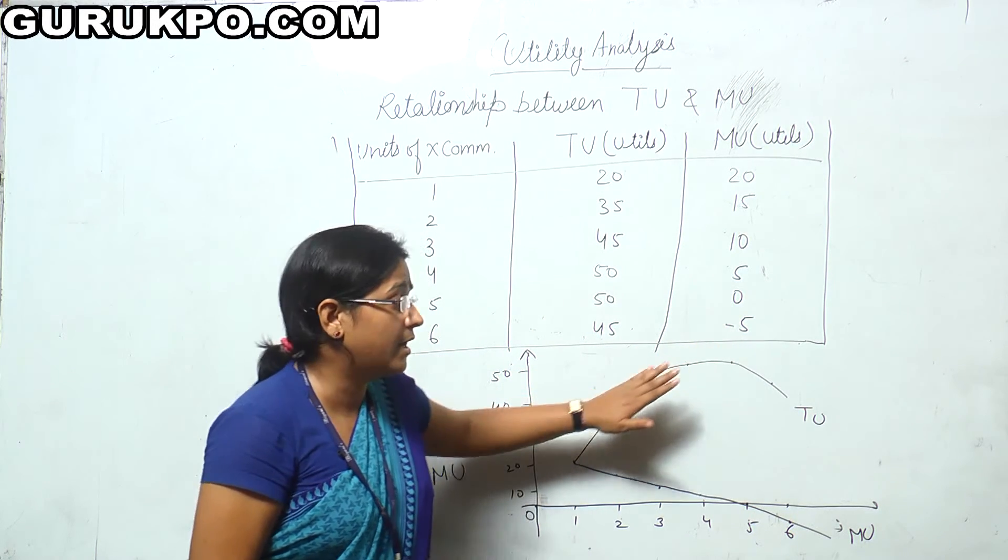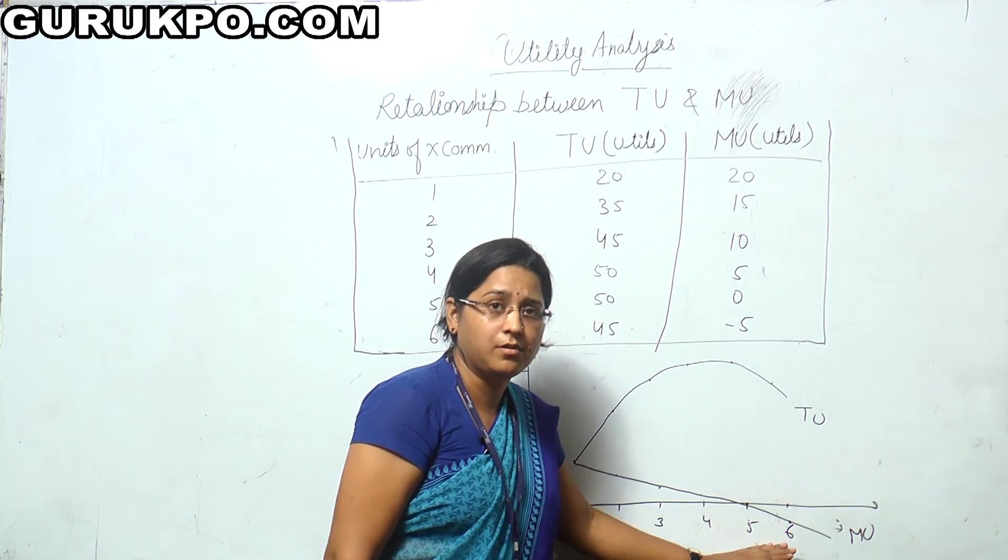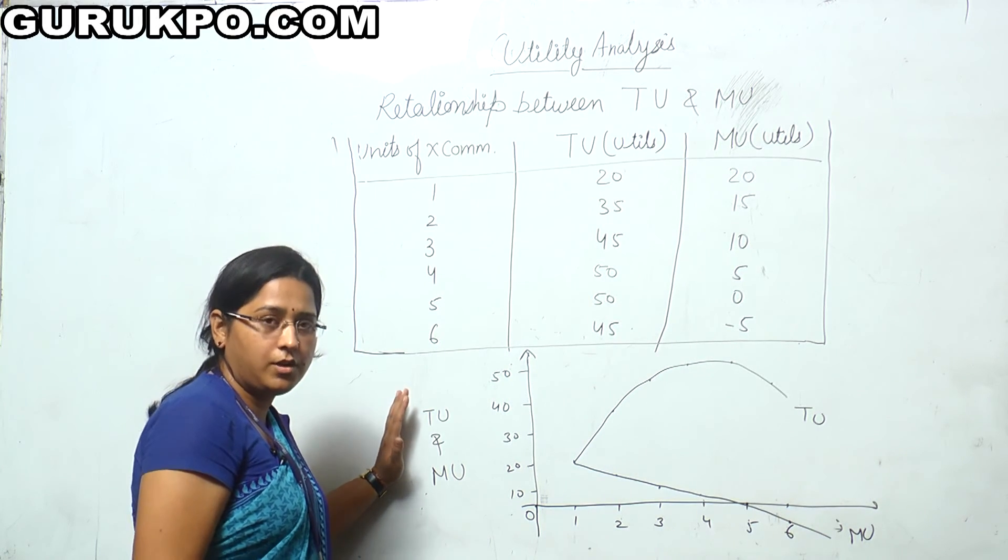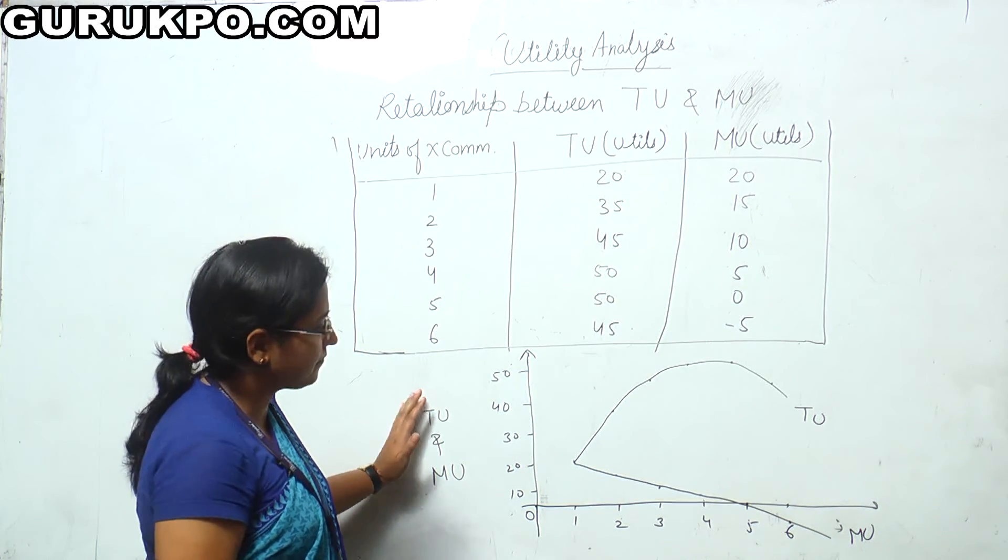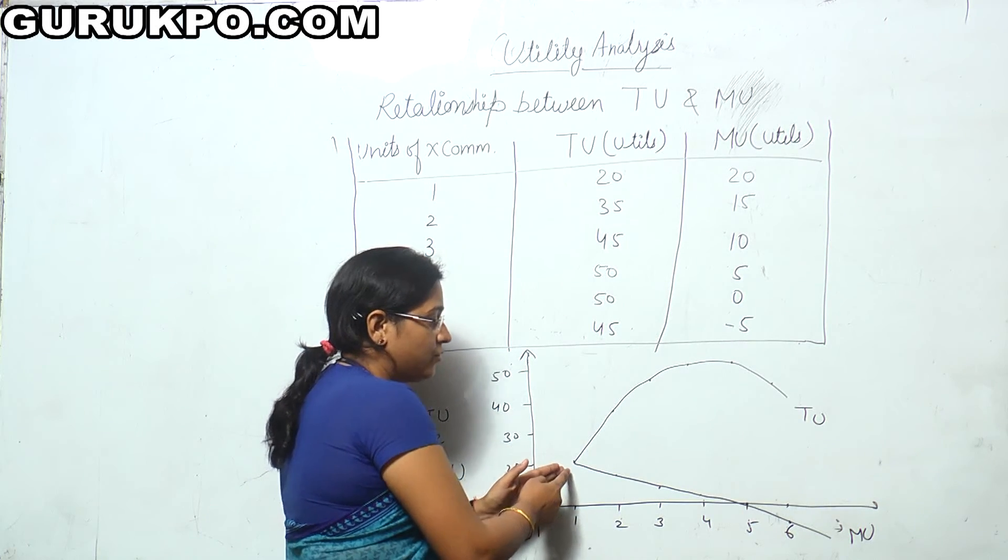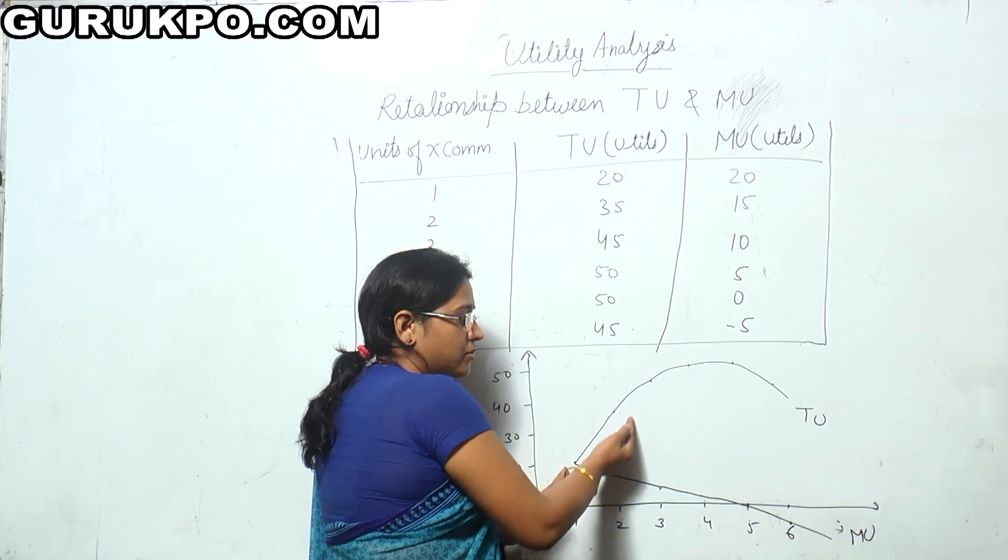We can present it with the graph also. On the x-axis, we have taken units of a particular commodity, that is apple. And on y-axis, we measure total utility and marginal utility. We can see with this diagram that as we consume units, as we increase our consumption, the total utility goes on increasing.